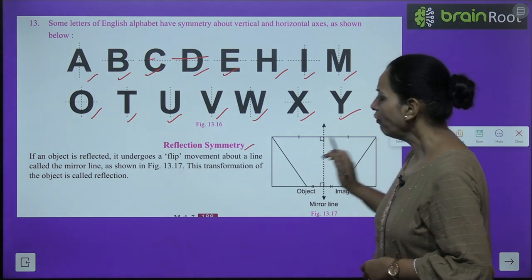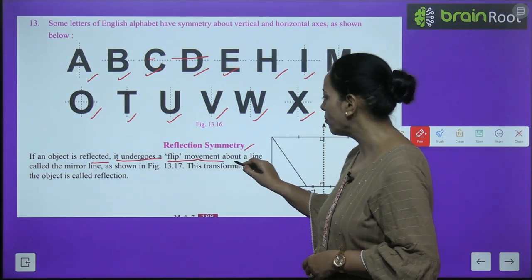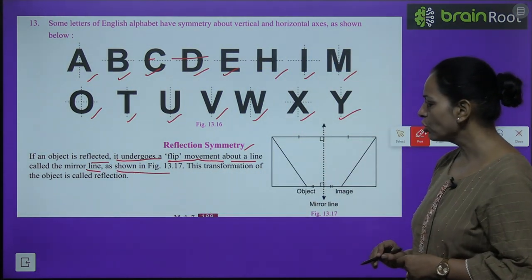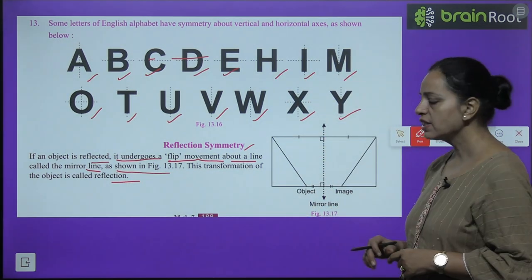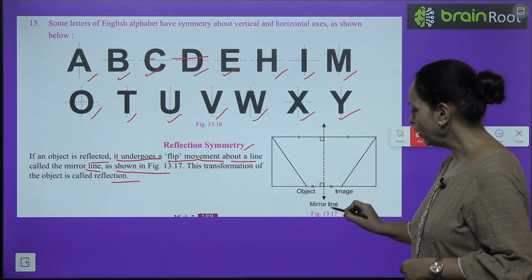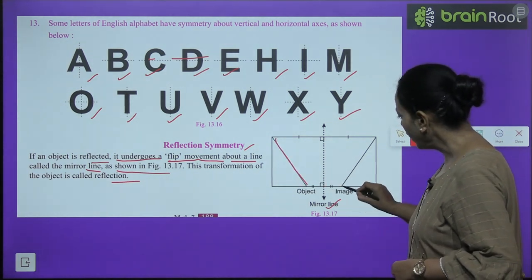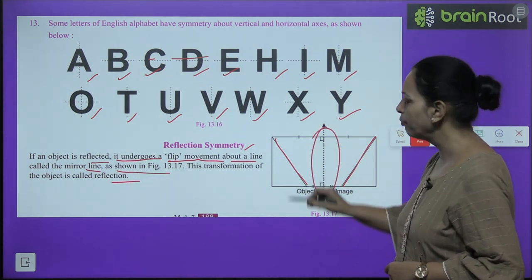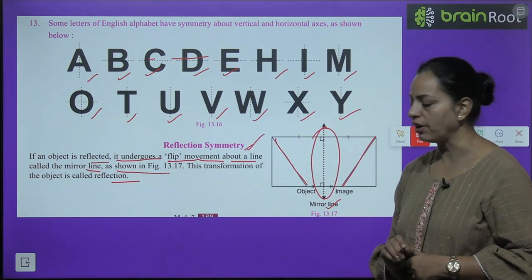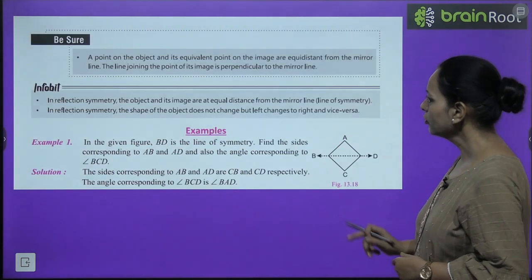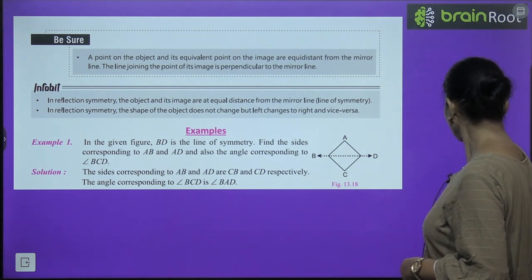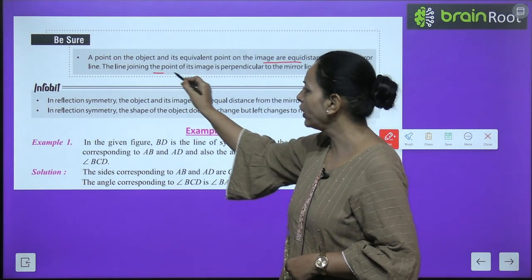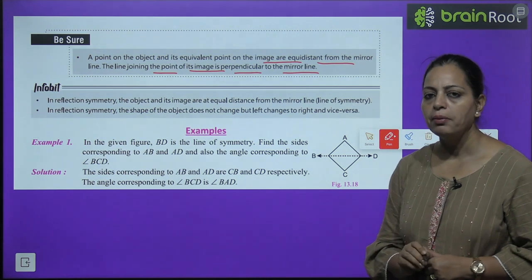Now, reflection symmetry. If an object is reflected, it undergoes a flip movement about a line called the mirror line, as shown in the figure. This transformation of the object is called reflection. A point on the object and its equivalent point on the image are equidistant from the mirror line, and the line joining the point to its image is perpendicular to the mirror line.